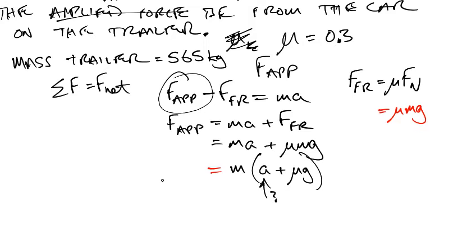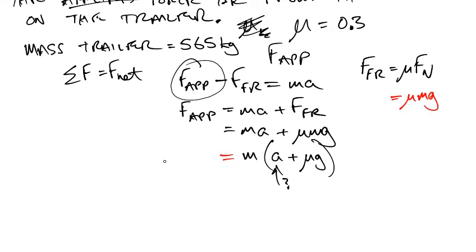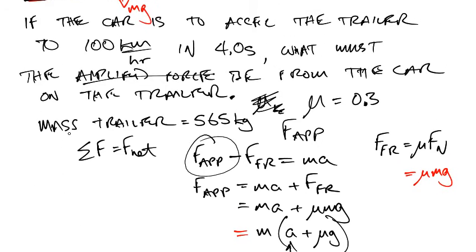So now this is—remember, this is a kinematics problem now. We're going to have to figure out what the A is supposed to be. Now what are we given? Well, we're given the initial velocity is zero. We're going to assume that.